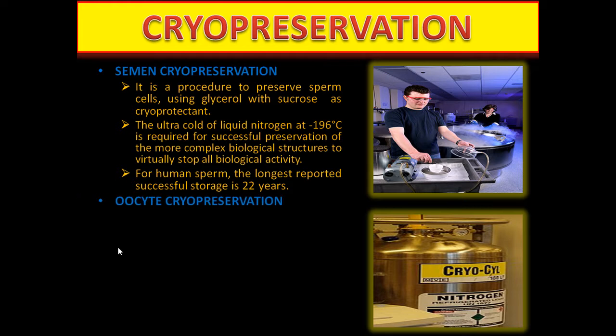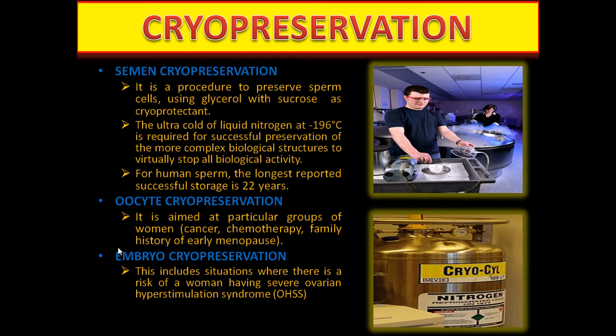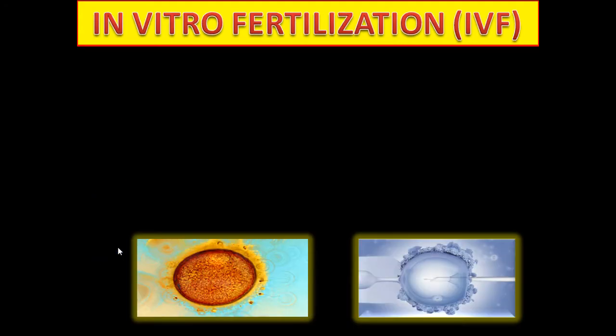Oocyte cryopreservation is aimed at particular groups of women: those undergoing cancer chemotherapy, or with a family history of early menopause. Embryo cryopreservation includes situations where there is a risk of a woman having severe ovarian hyperstimulation syndrome.